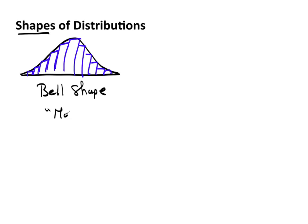Or sometimes simply referred to as mound shaped. Later we'll actually attach a more formal name to this. We'll actually name this, but for right now we just refer to it as the bell curve or a mound shaped curve.